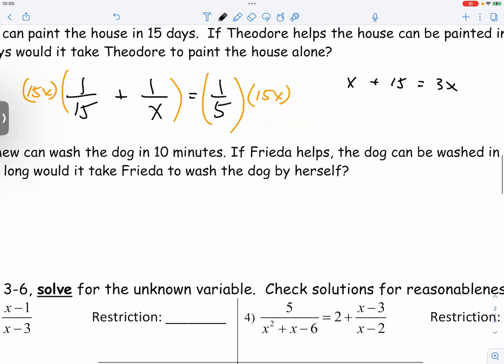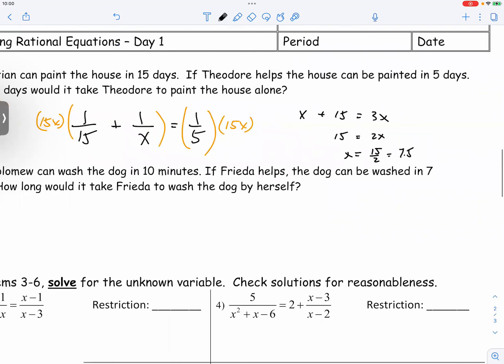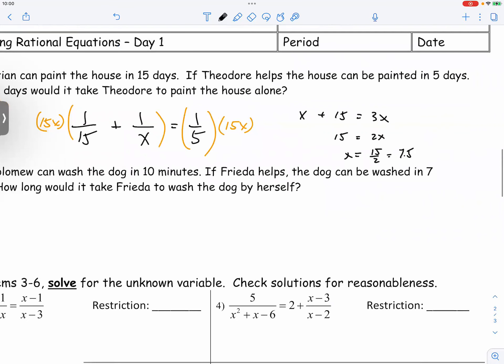So you would have 2X is equal to 15. So X is equal to 15 over 2, which is 7.5. So if Theodore paints the house alone, then it takes about 7.5 days.